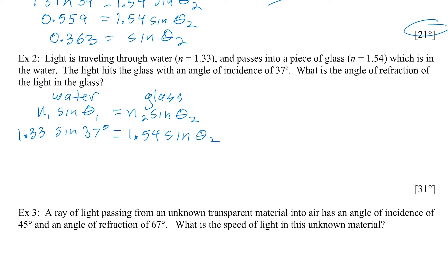This looks pretty similar to the previous question. So what I'm going to do is I'm going to multiply 1.33 times sine 37 and then get rid of this 1.54 by dividing by 1.54 while I'm at it.